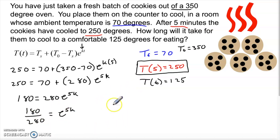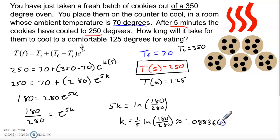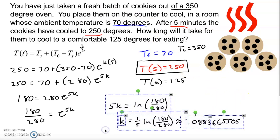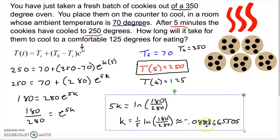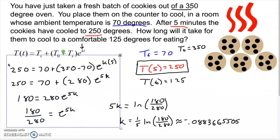Plugging that into the calculator gives approximately k ≈ −0.0883665505. Here's the thing — that k is pretty sensitive. Oftentimes in these problems, going three or four decimal places just isn't enough to guarantee the correct answer, so I'll store that on my calculator as x so I can use it later. Now that I've cleaned up my workspace and know the value of k, I can go back to the original question.